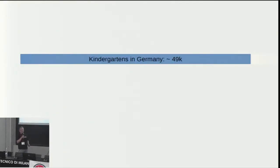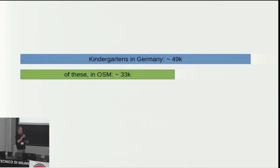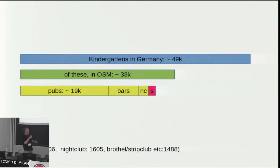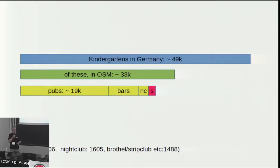In reality, if you look — this is just statistics for Germany — Germany has about 49,000 kindergartens overall. Of these, OpenStreetMap already has 33,000, so that's about two-thirds. If you look at other things in Germany, like pubs, there are 19,000 pubs mapped, 6,000 bars, 1,600 nightclubs, and just a tiny 1,488 brothels, strip clubs, and so on. The total number of all these things combined is still much lower than the kindergartens in OpenStreetMap.